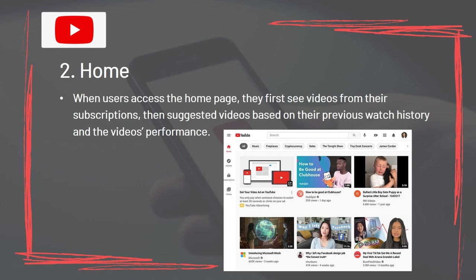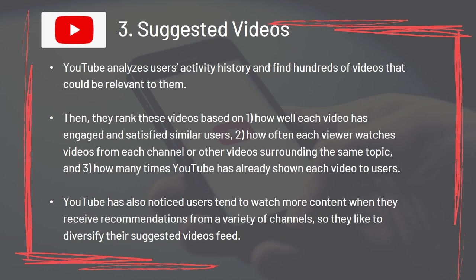Section 2: Home. When users access the homepage, they first see videos from their subscriptions, then suggested videos based on their previous watch history and video performance. YouTube analyzes users' activity history and finds hundreds of videos that could be relevant to them, then ranks these videos based on: how well each video has engaged similar users, how often each viewer watches videos from each channel or similar topics, and how many times YouTube has already shown each video. YouTube also diversifies suggested video feeds across a variety of channels.